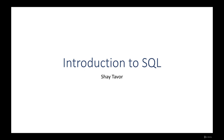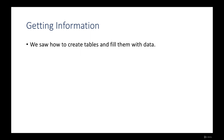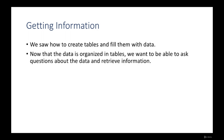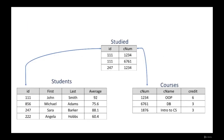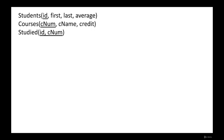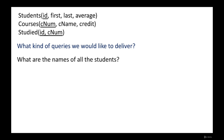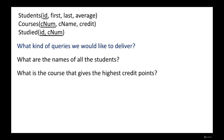Welcome to the new section about SQL. We saw how to create tables and fill them with data — and we actually did it with a lot of data in our tables. Now that the data is organized in tables, we want to ask questions about the data and retrieve information. These questions delivered to the database are called queries. For example, using the students, courses, and studied tables from earlier, we can ask: what are the names of all students? What is the course with the highest credit points? Which courses did John Smith take? What is the average grade in the OOP course?